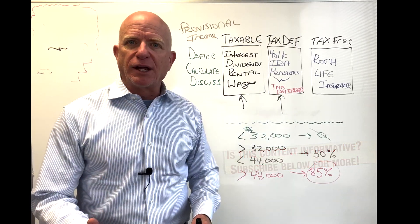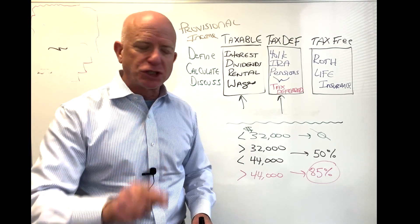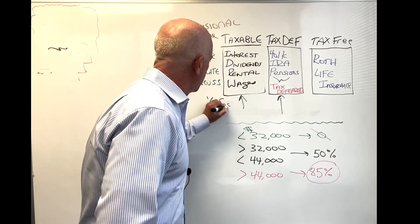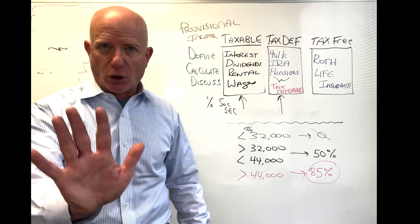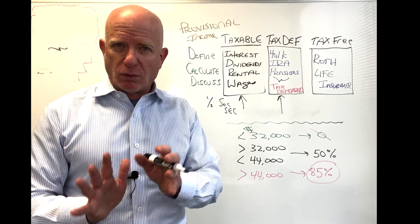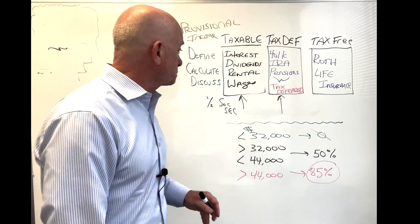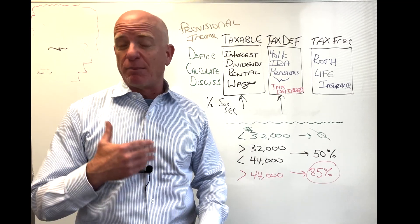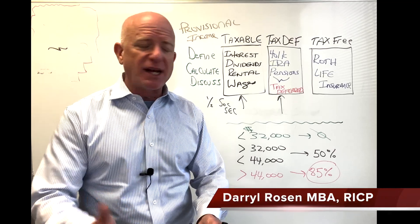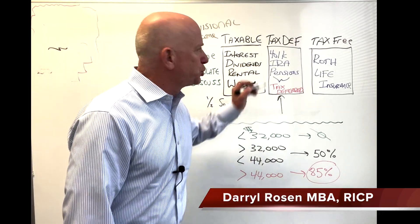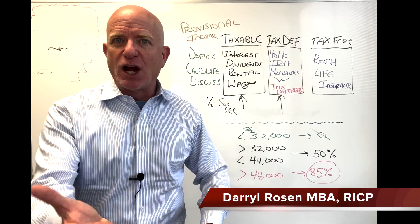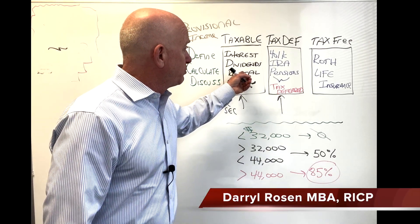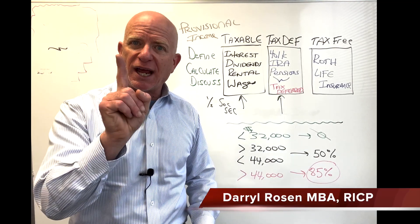Plus one half of your Social Security any given year. Let me say that again, then we'll put some numbers behind it: any taxable wages, any taxable interest income, any dividend income, anything that would come out on a 1099, any distributions from a 401k, from an IRA, pensions, anything that comes out of this bucket, anything that comes out of that bucket, plus one half of your Social Security is your provisional income.